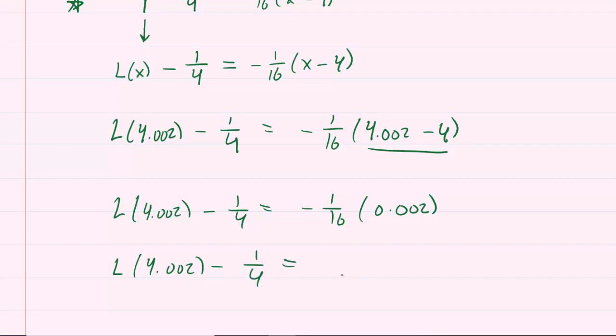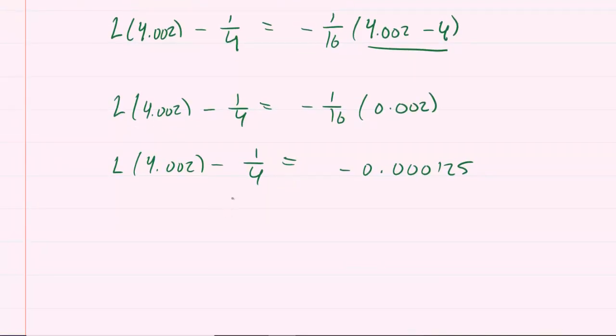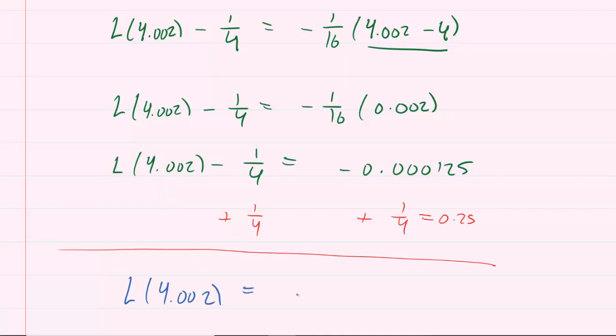You do that and you get, or you should get, negative 0.000125. And then finally, you're going to add 1 fourth to the other side. If it helps, you can add .25. That's equivalent, of course. And when you do that, you can see that you get the following value.